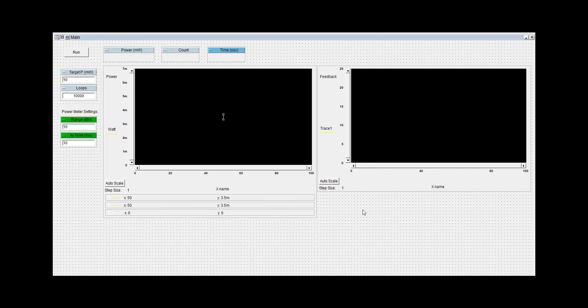We'll now take a look at how the N7785 can be used to continuously stabilize the state of polarization. We've set the loop count high so the program keeps running.